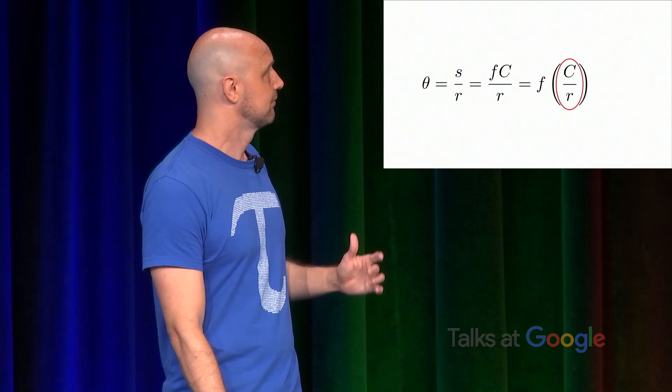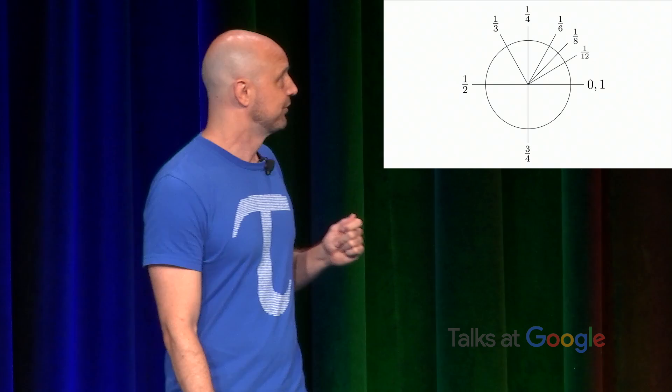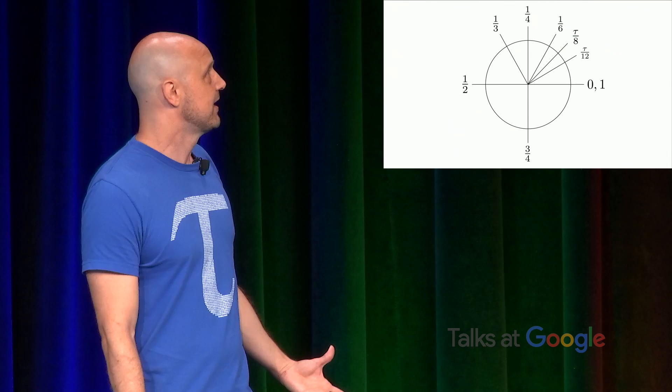So if you were a believer in pi, I fear that the resulting diagram of special angles will shake your faith to its very core. Because this 1 12th of the way around, it's just tau over 12. And eighth is tau over 8. And so on around the rest of the circle. Finally arriving back at one turn equals 1 tau.